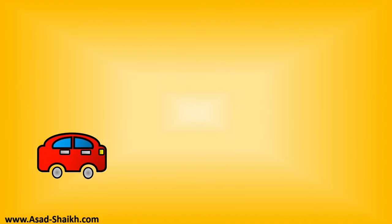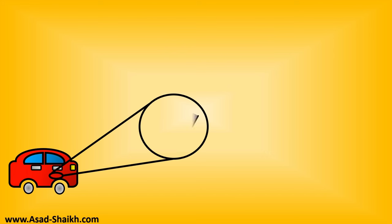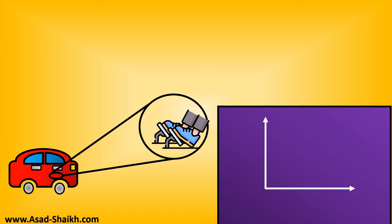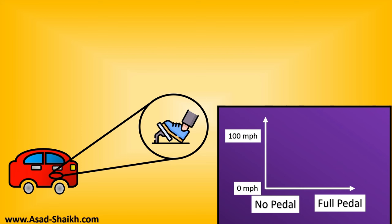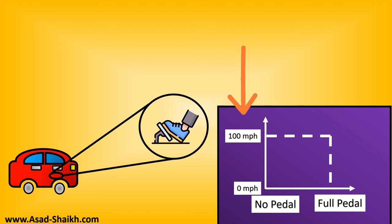The first important concept in control valve sizing can be explained with the example of a car. Let's take a simple car and plot a graph with the accelerator pedal on the x-axis and the speed on the y-axis. When you fully press the pedal, there has to be a maximum speed the car can run — in our example, it runs at 100 miles per hour.